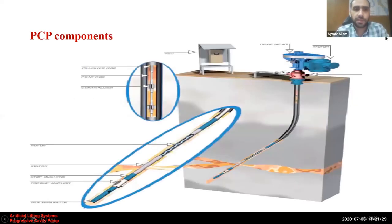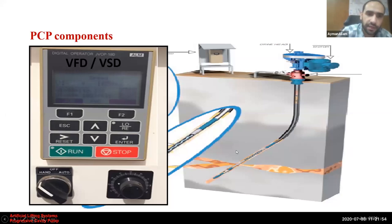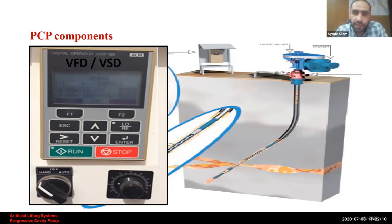Now let's go through the PCP components, classified as surface components and downhole components. Starting with surface components: number one is the electric panel, also known as VFDs or VSDs — Variable Frequency Drives. The function of the electric panel is to protect the motor against any power source disturbance, provide power consumption optimization, and enable control of the motor speed and consequently the pumping speed.